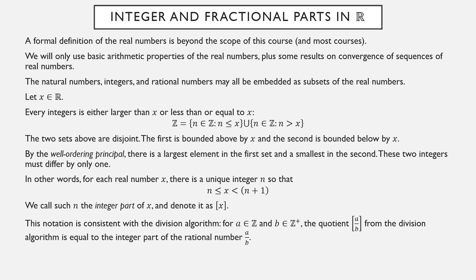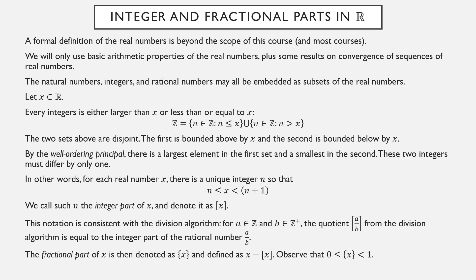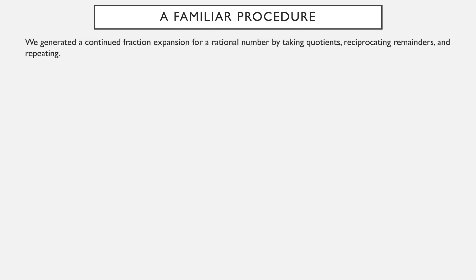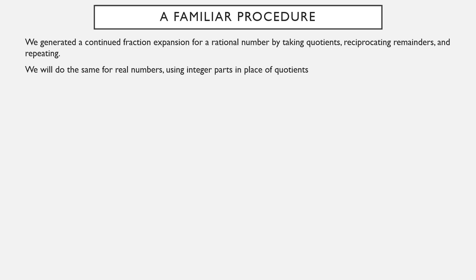This notation is consistent with the division algorithm, which is why we still use it. The quotient a over b from the division algorithm is the integer part of the rational number a/b. The fractional part of x is then x minus its integer part. Since the integer part satisfies n ≤ x < n+1, x minus the integer part must be between zero (inclusive) and one, possibly equal to zero if x was already an integer.